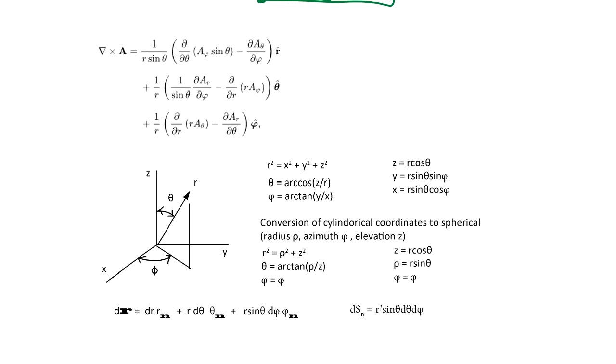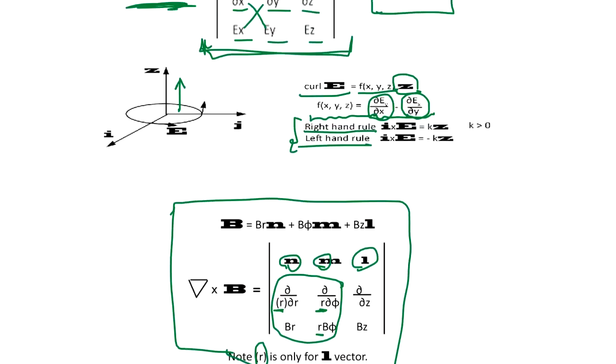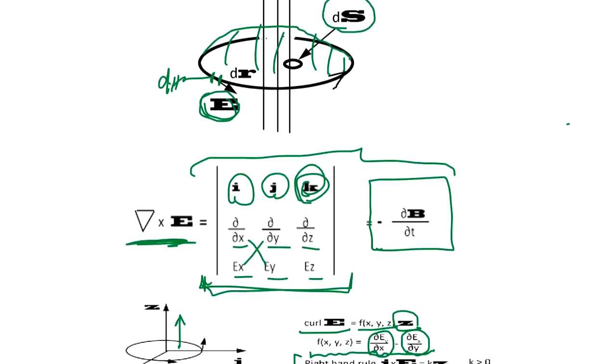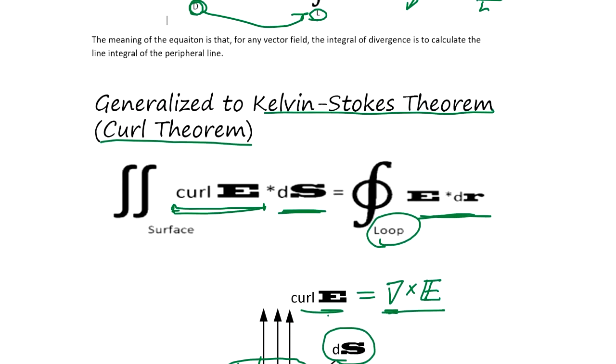But we often use this. And the coordinate definition is theta here and phi here. And this is the coordinate. So the curl theory is basically one of Maxwell's equation. And Kelvin Stokes is a different name. It's called the curl theory because of this curl here. And the curl is this.